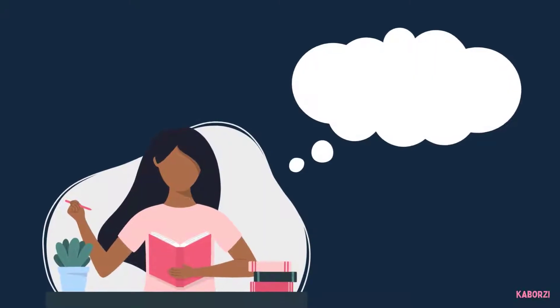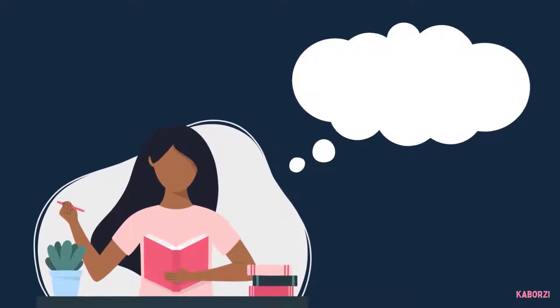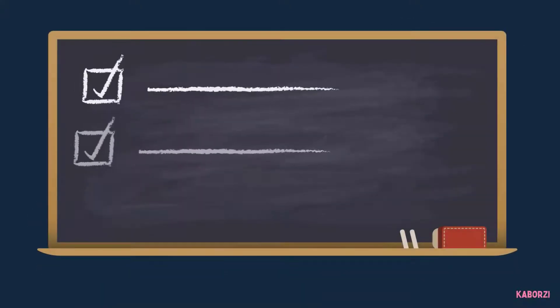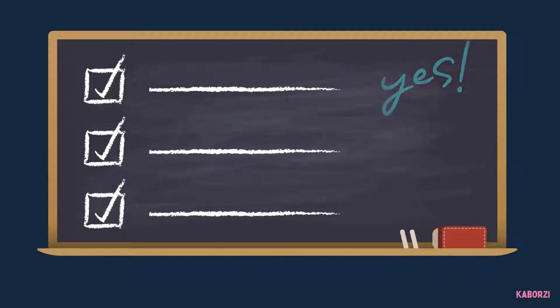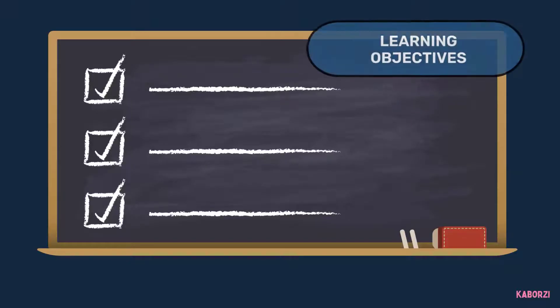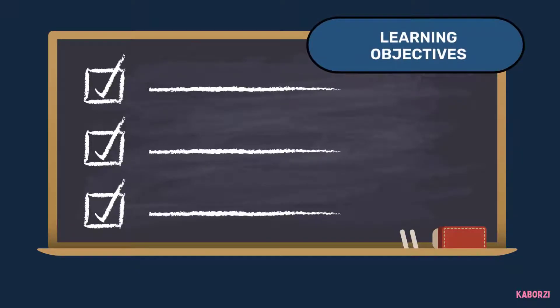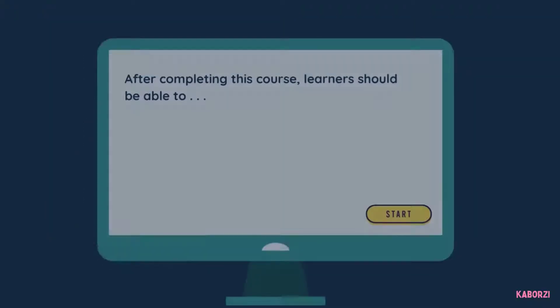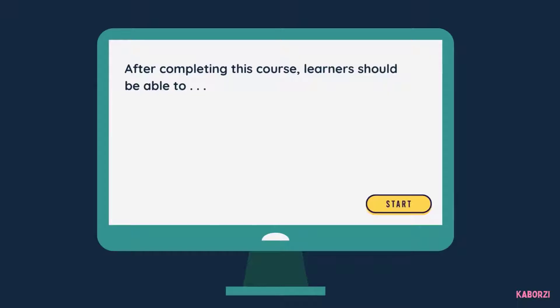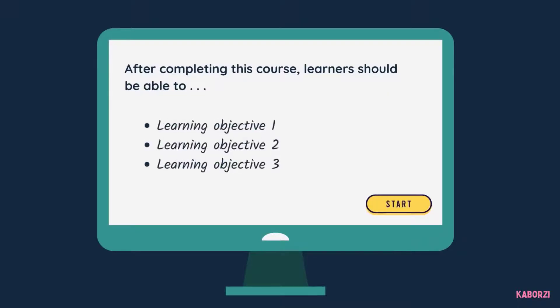Think back to the last eLearning course or training program you took. Did the session begin with a long list of bullets outlining what you'd learn in the experience? Chances are it did, and chances are also pretty good that whoever wrote that list called these learning objectives. We often see learning objectives set up in a predictable way: 'After completing this course, learners should be able to…' followed by a list of bullets.